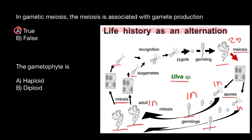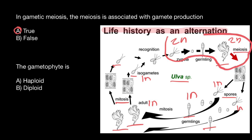And gametes are going to be also 1N — haploid. Not through the process of meiosis, because these are haploid entities, but through the process of mitosis. These gametes would join and would make a diploid zygote — 2N. Starting from the zygote and up to the spores, all of this is going to be diploid entities, and the rest would be haploid entities.